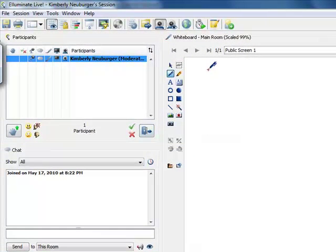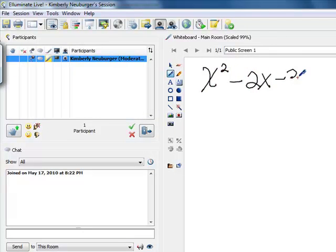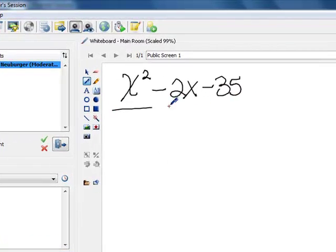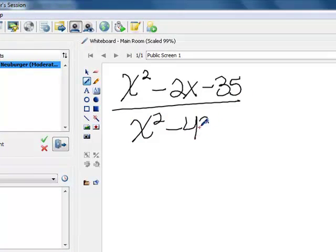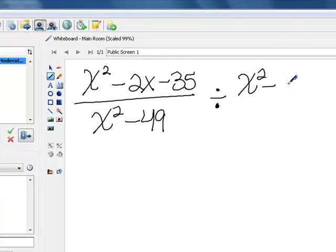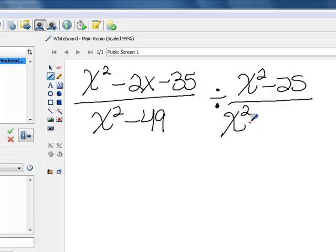Let's say that you have x squared minus 2x minus 35 over x squared minus 49, and you're trying to divide that by x squared minus 25 over x squared plus 7x plus 10.